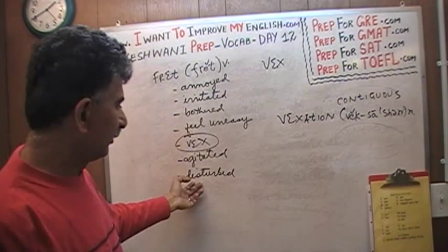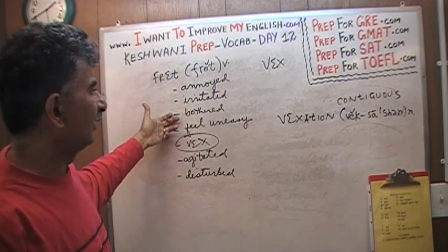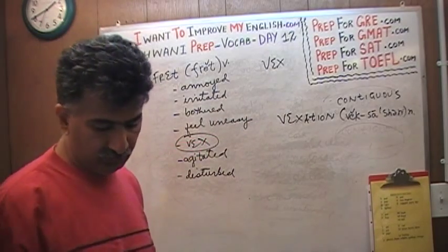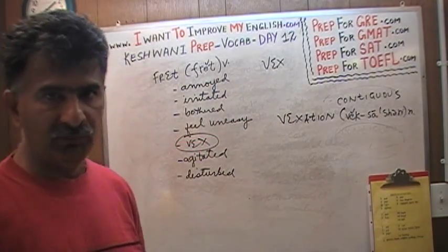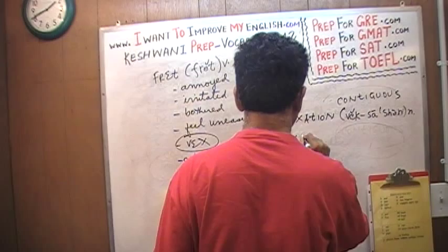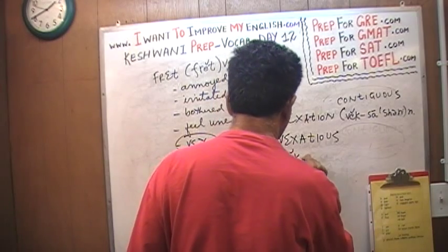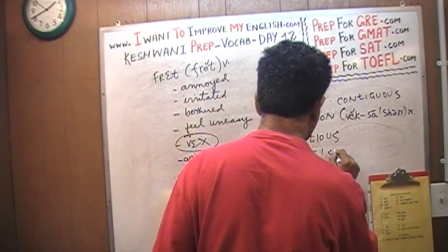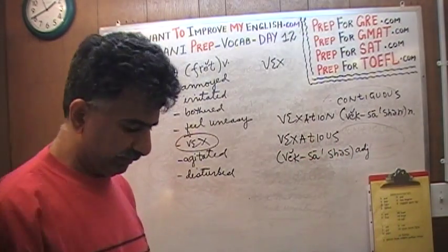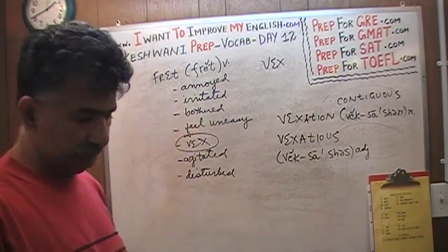Something that causes bother, irritation, annoyance is said to cause vexation. And anything that causes vexation is said to be 'vexatious' — vexatious is the adjective. So vexation is the noun: annoyance, that's all.